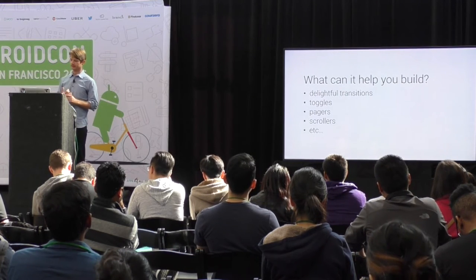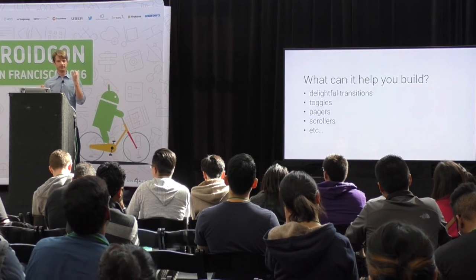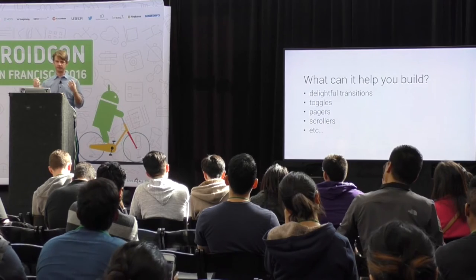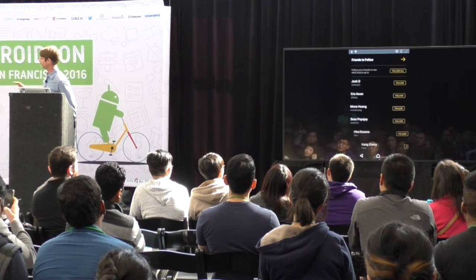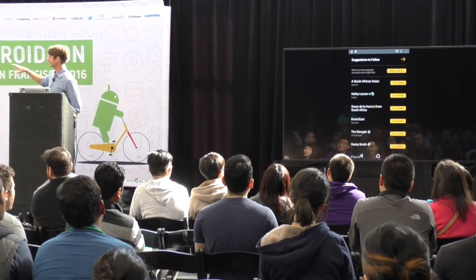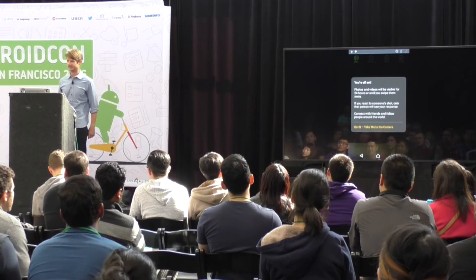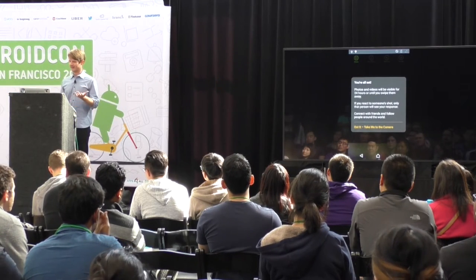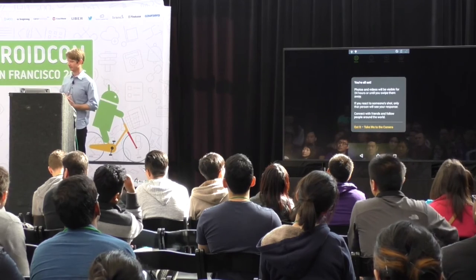Rebound can help you build all kinds of things: delightful transitions, pagers, toggles, scrollers — anything where you want natural-feeling motion with goal-driven behavior, because it's a spring seeking a target value. Here's one example from a project I worked on called Slingshot, an app targeted at teenagers where we wanted a lot of lightweight, delightful animations. We have a cascading animation where each item in the list follows the next. This might be overkill for a more grown-up application, but we wanted something really fun. These kinds of fun transitions can really add to the delight of your app if that's the experience you're going for.